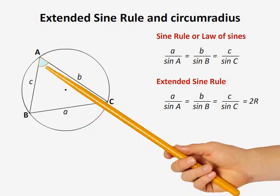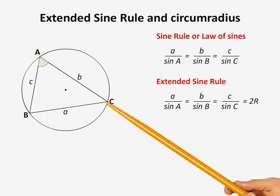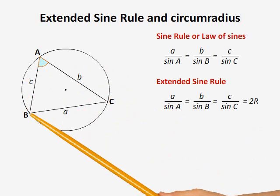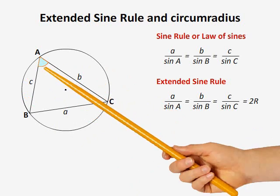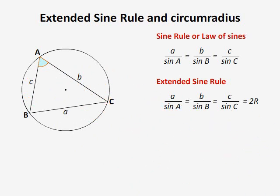We know that angles subtended by a chord on the same segment of a circle are always equal. Here, this chord subtends angle A on this segment of the circle. Now, if we move this point A along this segment of the circle like this, the angle A remains the same.